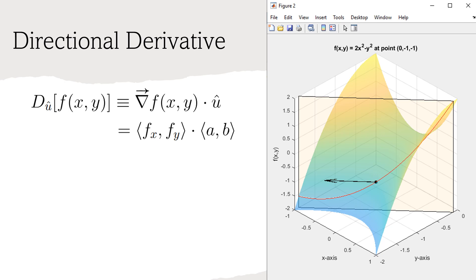I will be using the subscript notation for partial derivatives for simplicity's sake. Next, let us define the x and y components of the unit vector u as a and b. By definition, unit vectors have magnitude 1, so a squared plus b squared must equal 1. After following this process, we find the formula for the directional derivative is the partial derivative of f with respect to x times a, plus the partial derivative of f with respect to y times b.